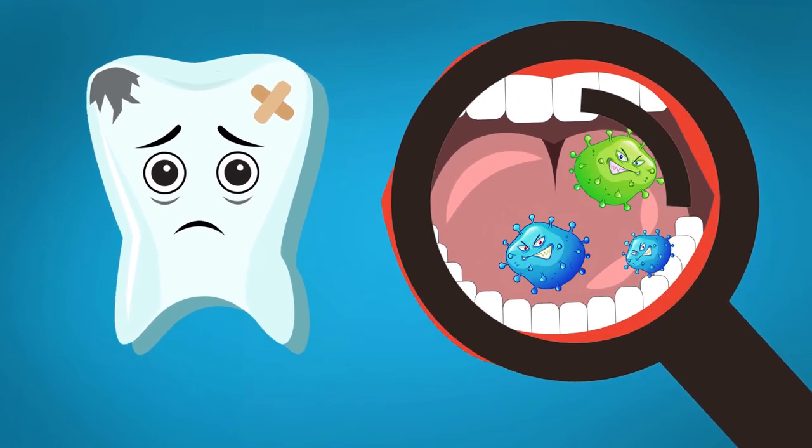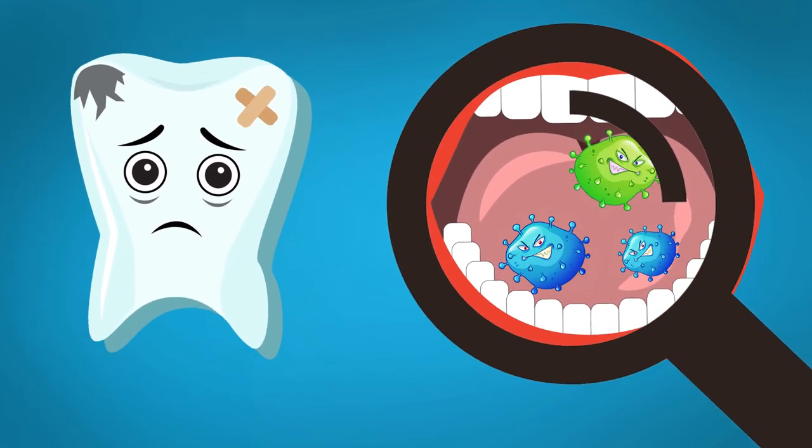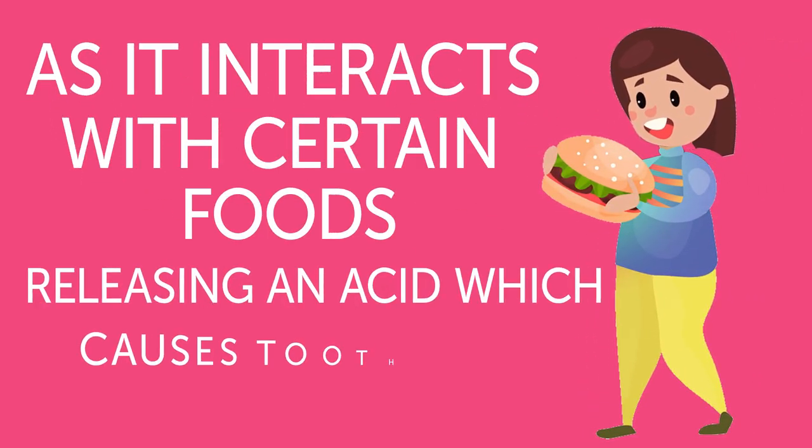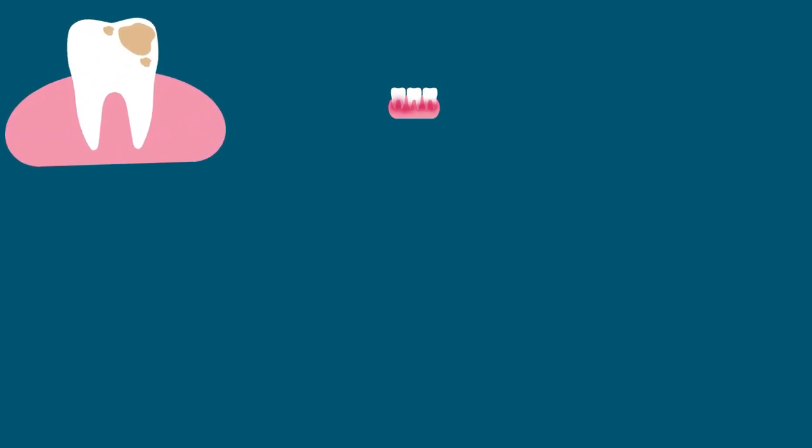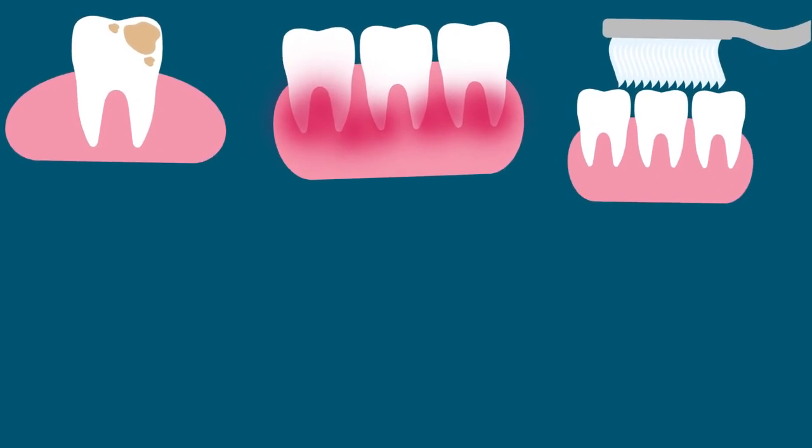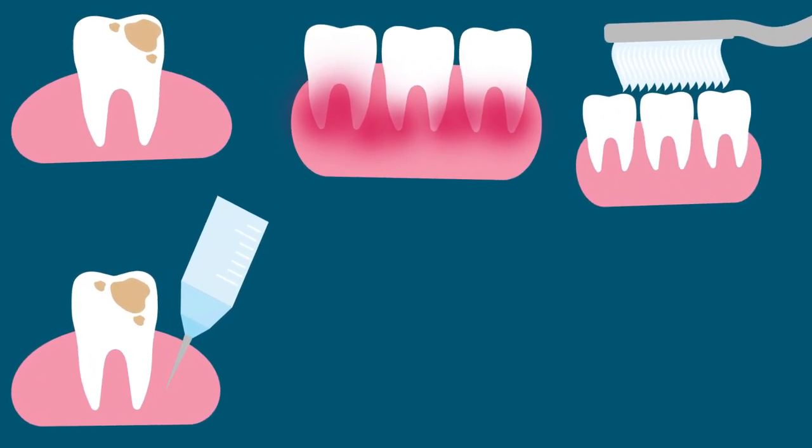It is invisible to the eye but is harmful to the teeth, as it interacts with certain foods, releasing an acid which causes tooth decay. Built-up plaque can also turn into tartar, which is much harder to remove and can cause gum recession and inflammation.